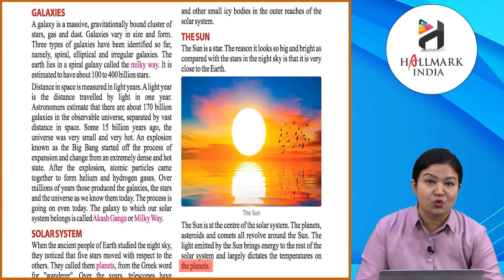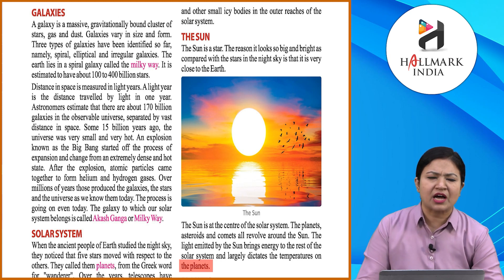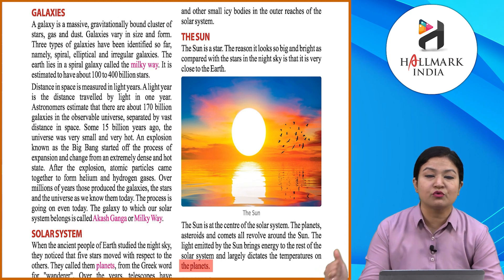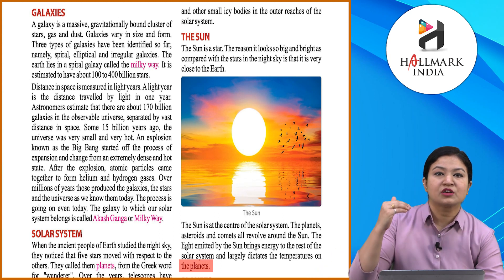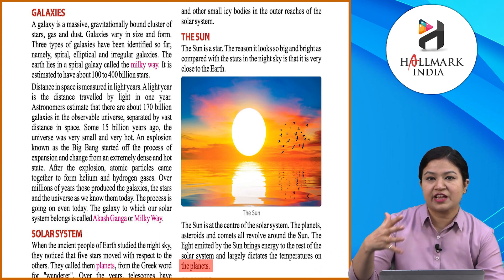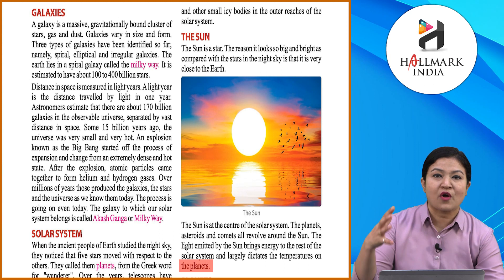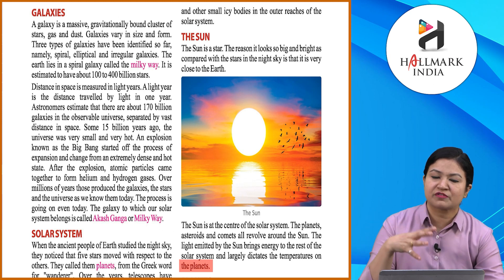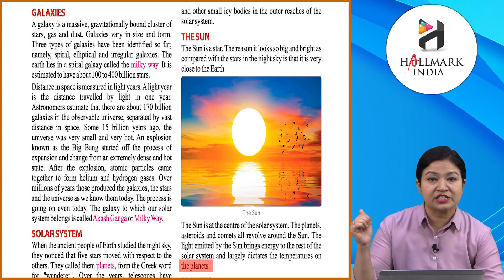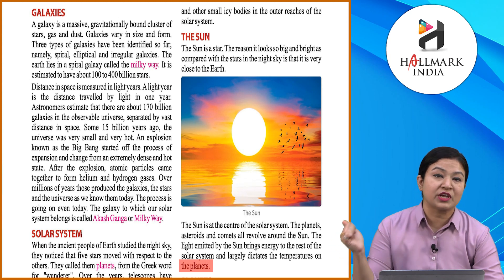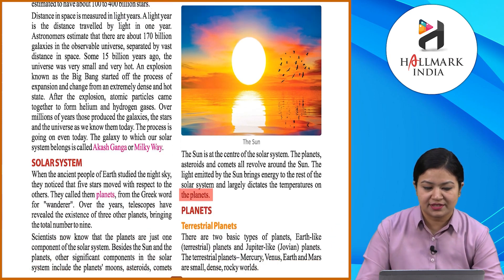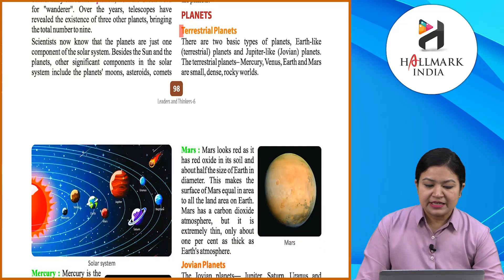The Sun is a star, and though its size is not particularly unusual compared to other stars, it is very close to Earth which is why it provides so much heat and light to our planet. The Sun provides heat and light to all the planets in the solar system.